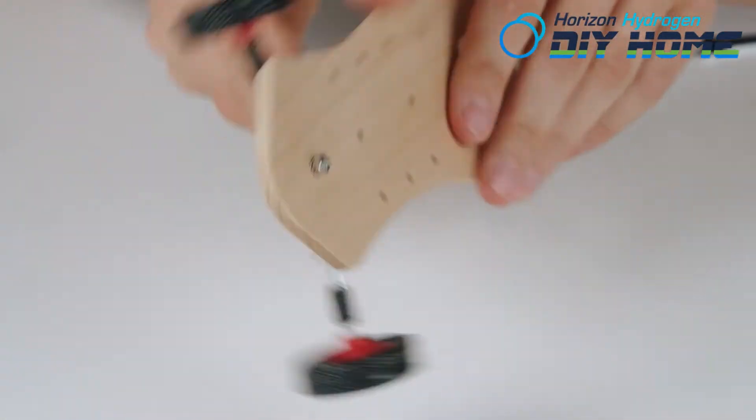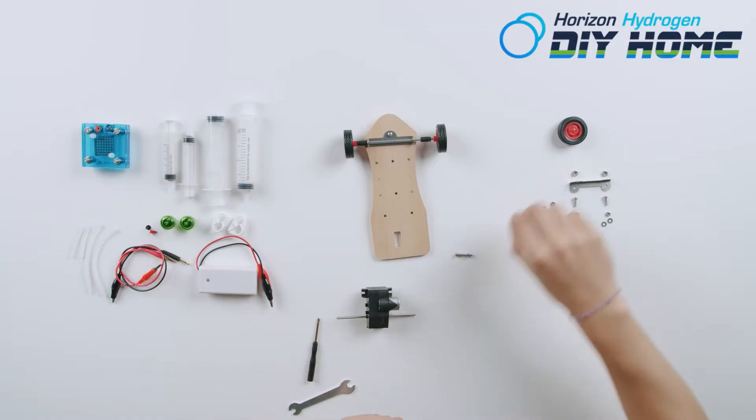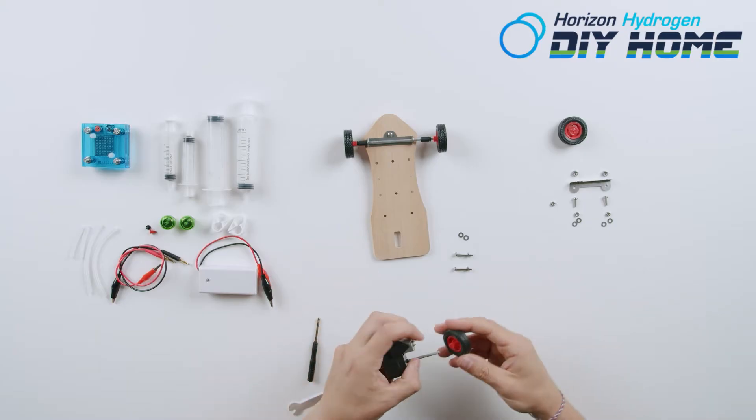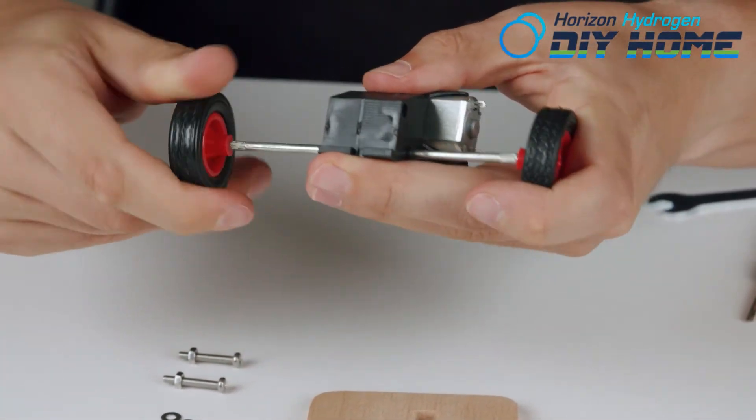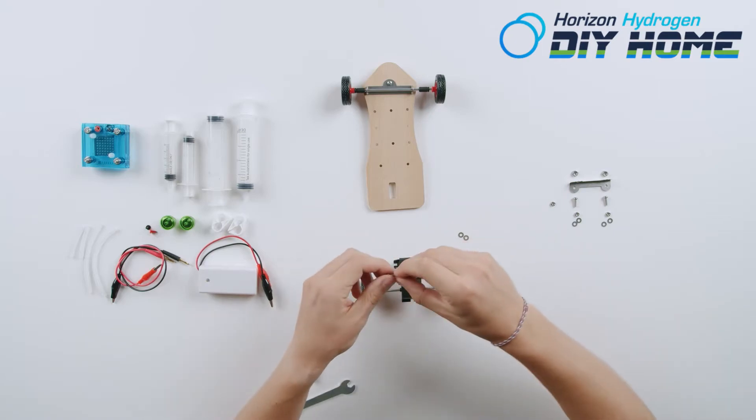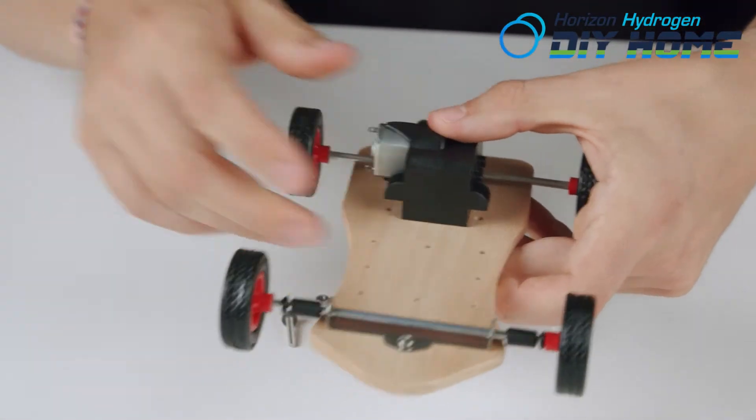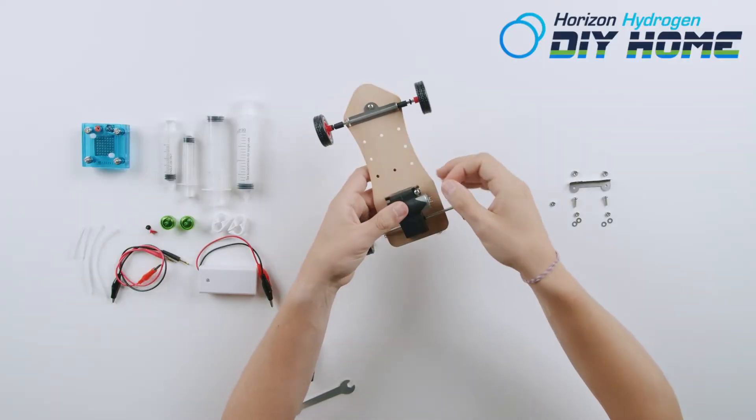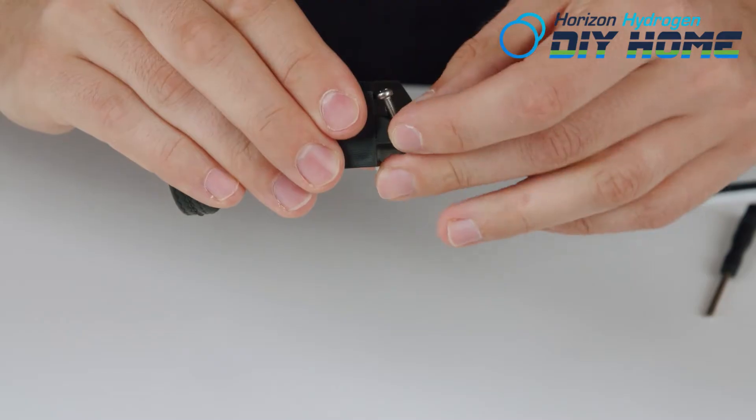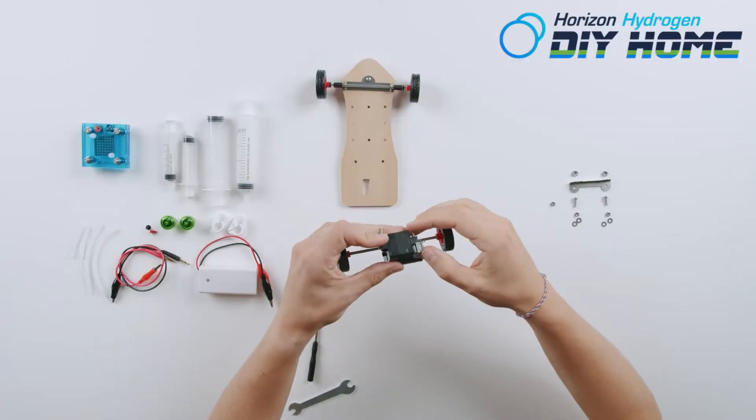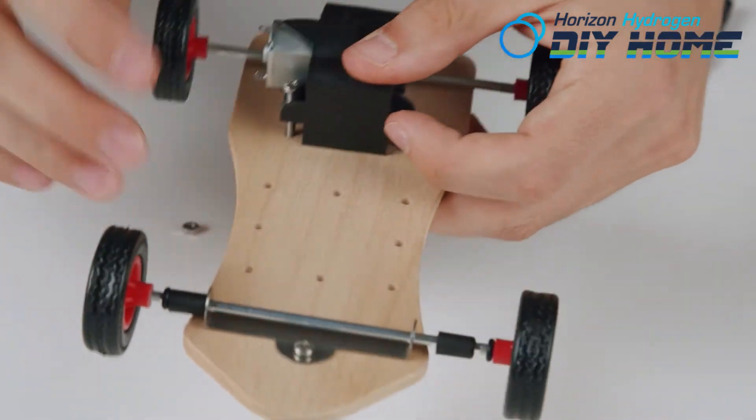Now take the motor and install wheels on each side of the axle. Use two long screws to install motor onto chassis. Use small nut to secure motor to chassis. Snugly tighten.